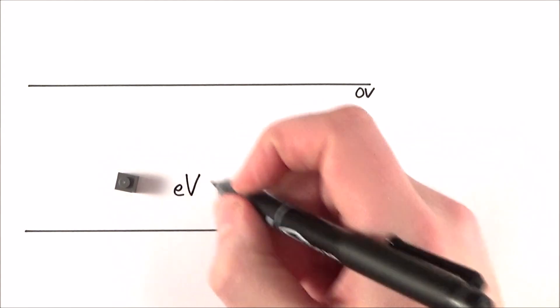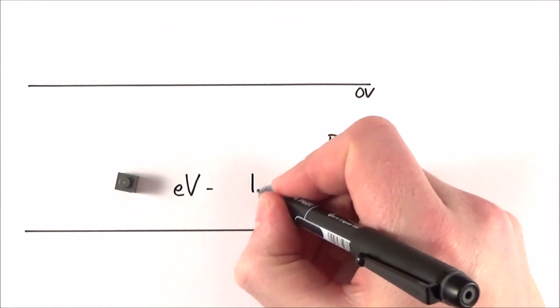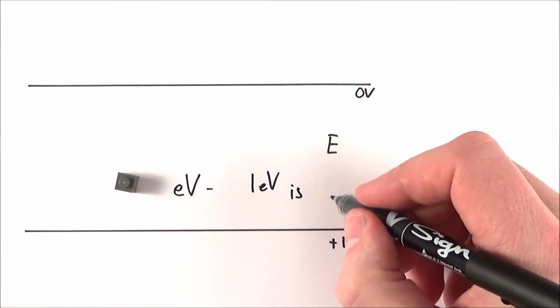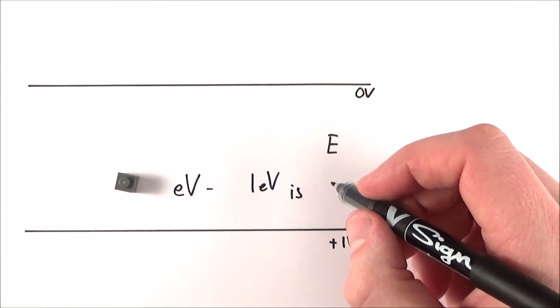So EV stands for the electron volt. And one electron volt is the energy gained by an electron that is accelerated through a PD of one volt.